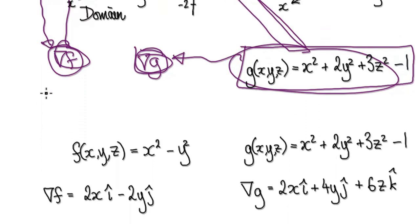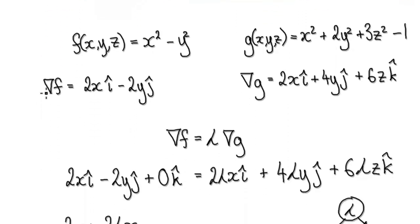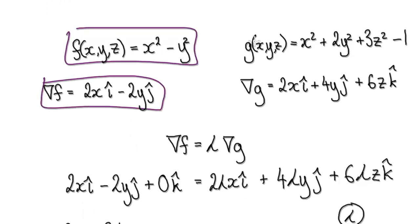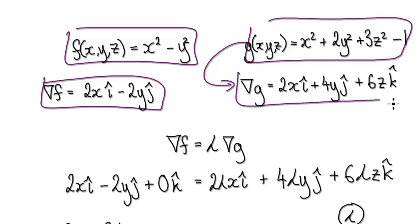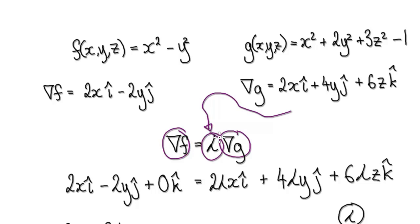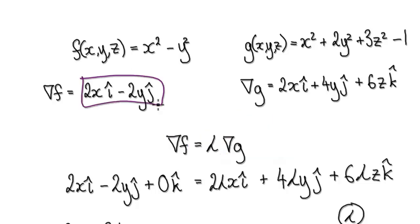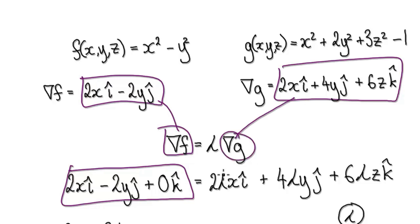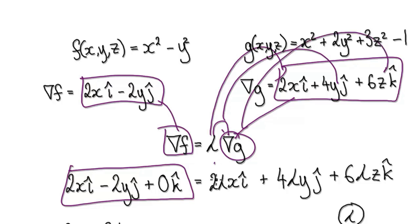Our first step is to compute the gradient vector of both. Computing the gradient vector of the first function gives us this, and computing the gradient vector of the constraint gives us this. Now we require the two vectors to be exactly the same but only differing by a scalar amount. So we can put this into here, and put this into here — don't forget you've got to multiply this as well. That will then give us this.